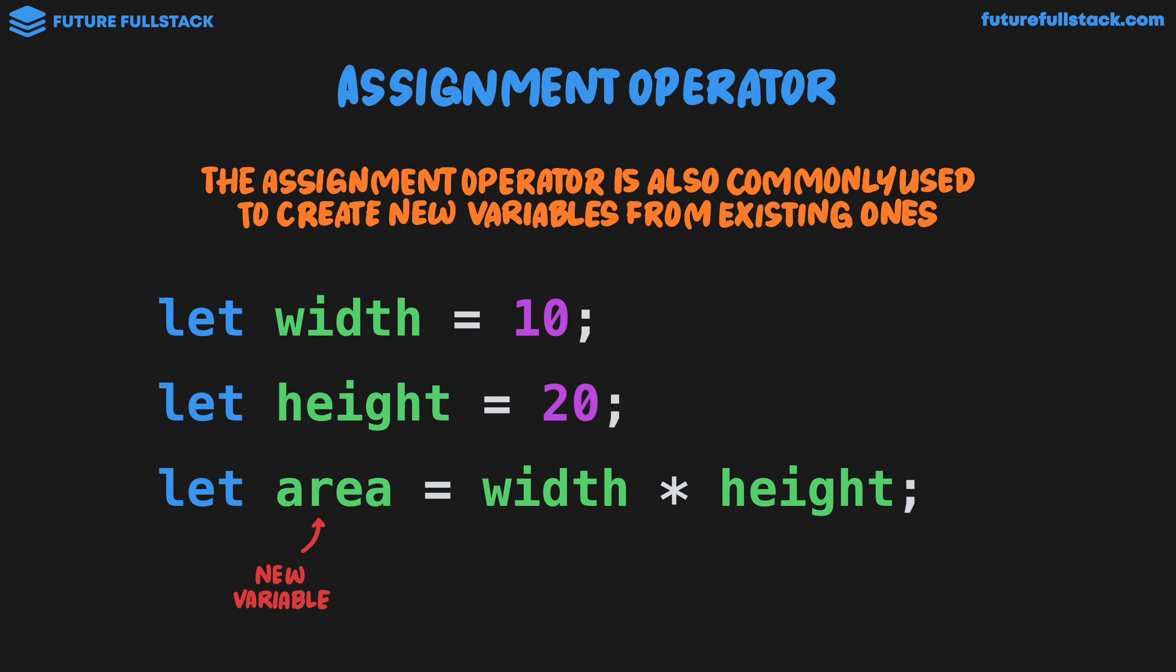we could declare a new variable let area equal width times height. So we have a new variable area, we have our assignment operator, and the value assigned to area is made up of existing variables. That is 10 times 20. So the variable area will be storing the value 200.